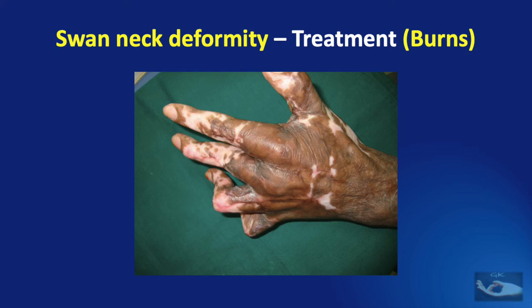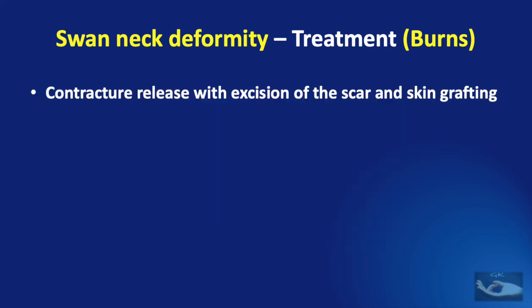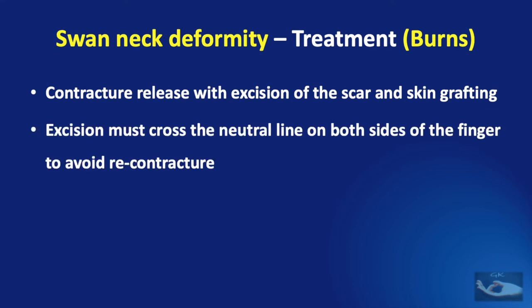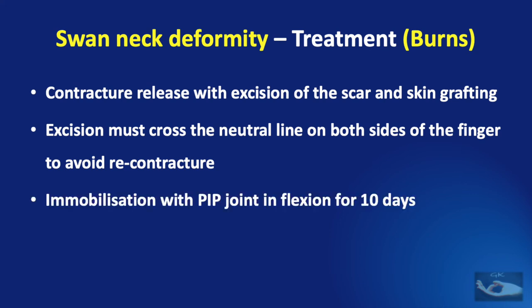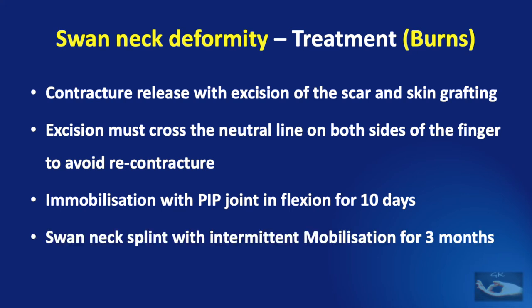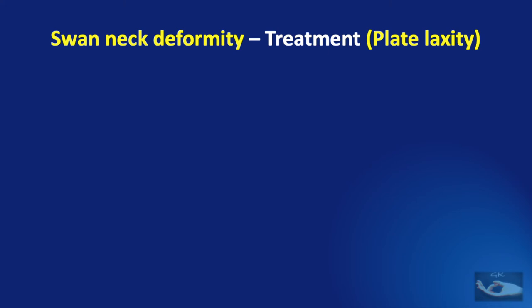Treatment of swan neck deformity arising in a burn scar requires certain principles: the skin contracture needs to be released with excision of the scar and skin grafting; the excision must cross the neutral line on both sides of the finger to avoid re-contracture; it is important to immobilize with flexion at the proximal interphalangeal joint for a minimum of 10 days to 2 weeks; and the swan neck splint must be applied with intermittent mobilization for a period of not less than three months.